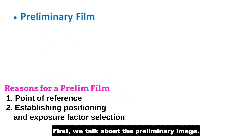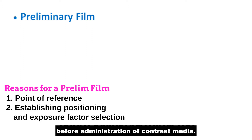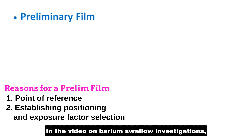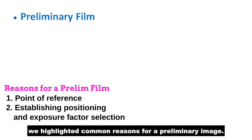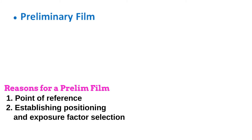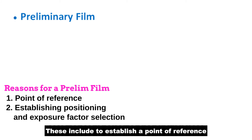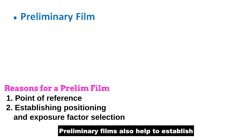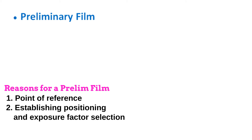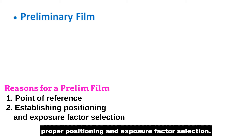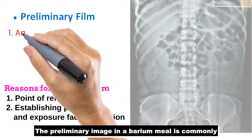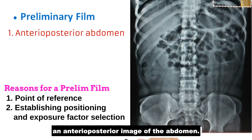First, we talk about the preliminary image. A preliminary image is an image acquired before administration of contrast media. In the video on Barium Swallow investigations, we highlighted common reasons for a preliminary image. These include to establish a point of reference against which the contrast images might be compared. Preliminary films also help to establish proper positioning and exposure factor selection. The preliminary image in a Barium Meal is commonly an anteroposterior image of the abdomen.